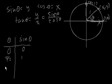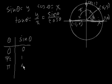What happens when theta equals pi radians? At pi radians, we intersect the unit circle at negative 1 comma 0. What's the y-coordinate? It's 0, so sine of pi equals 0.